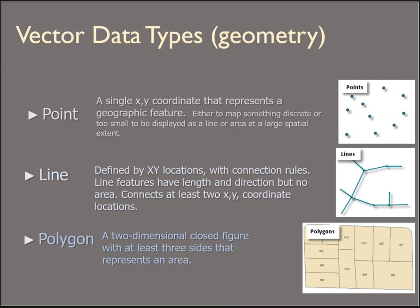The different geometry types are points, lines, and polygons. Points are single x-y coordinates that represent a geographic feature or a location. You can use points either to map something discrete or something too small to be displayed as a line or an area at a really large spatial extent.